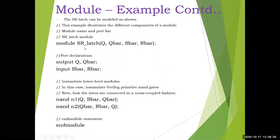So 'module SR_latch' - 'module' is the keyword, then the module name is 'SR_latch'. Then the port list: Q, Q bar, S bar and R bar - whatever is there, we will be writing it in the same order. Then here - input you can write first, then output - this is called port declarations. More about that we will be looking at in the second part. So Q, Q bar are the outputs and S bar, R bar are the inputs - just they are declared. Then we are writing the programming part - this is a gate level description.